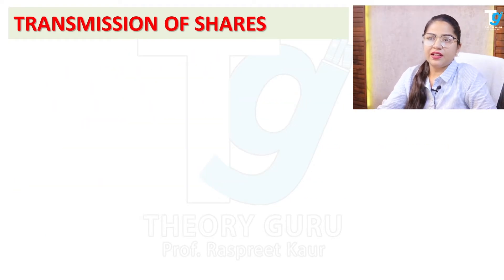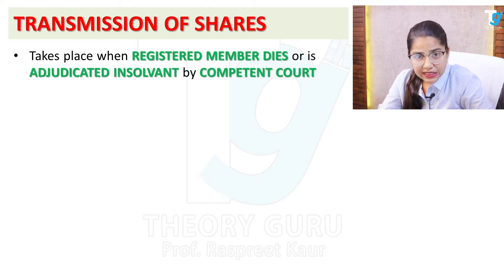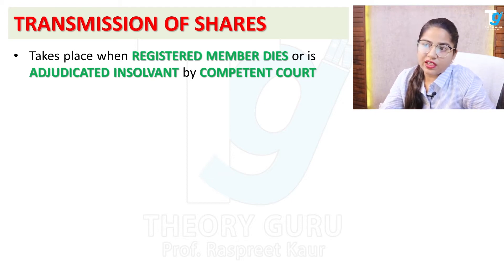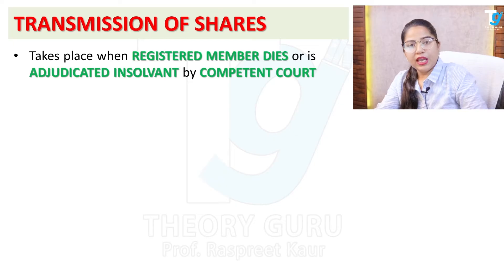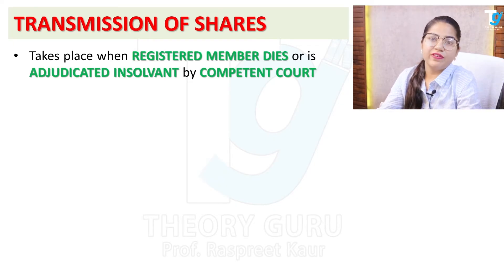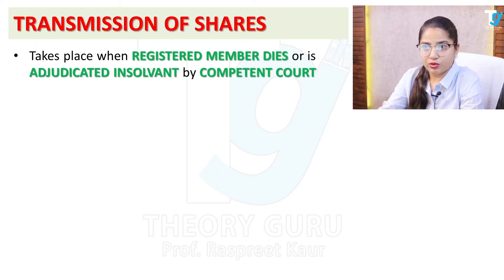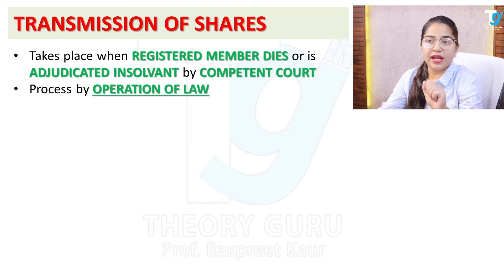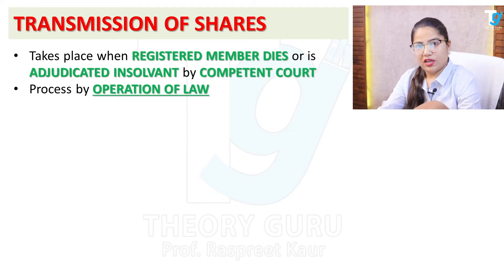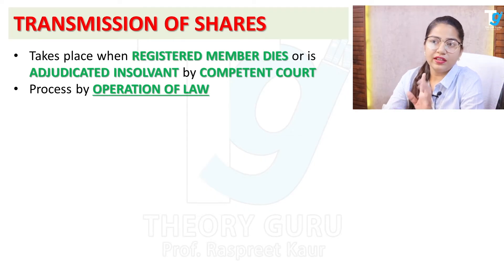Now let's talk about transmission of shares. This takes place when a registered member dies or is adjudicated insolvent by a competent court. So if the person in whose name the shares are held dies, or the court declares that person insolvent, then transmission of shares occurs, because this process happens by operation of law. If the person dies, the law will decide who is the next legal heir to whom the shares will pass.